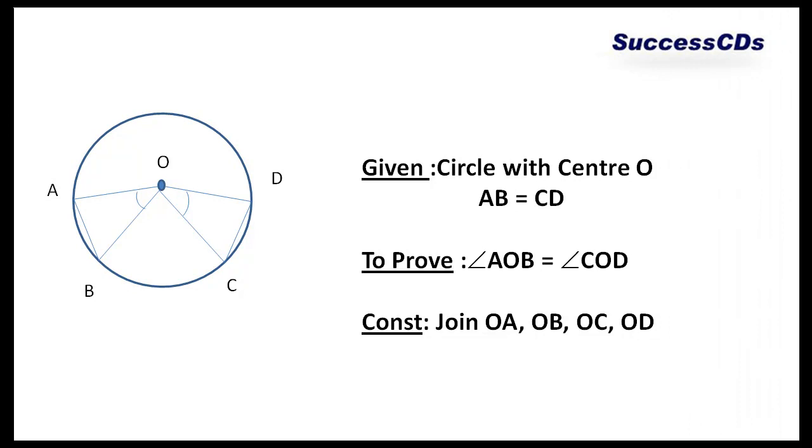Let's have a look. We are given a circle with center O and two chords AB and CD which are equal to each other. What I have to prove here is angle AOB is equal to angle COD, since these are the angles subtended by the chords at the center.